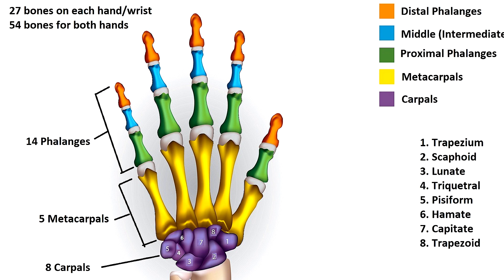When you combine both hands and wrists you get a total of 54 bones out of the 206 bones in the average adult skeleton.